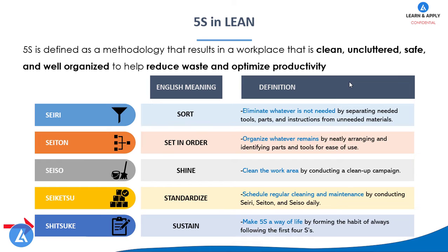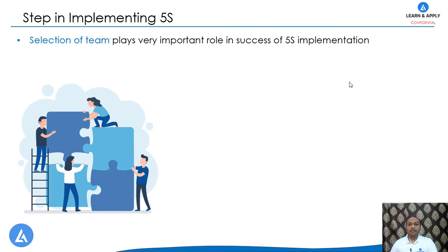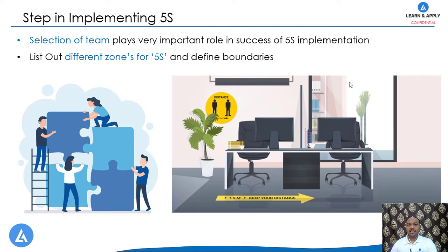Now let's understand the steps in implementation of 5S in further detail. Before starting the implementation, we need to create a team, which is important to continuously carry out the 5S activities. Selection of the team plays a very important role in the success of 5S implementation. Once the team is selected, divide the entire organization into multiple areas called 5S zones, and define the boundaries for each zone so that identification and tracking of 5S progress will be easier.